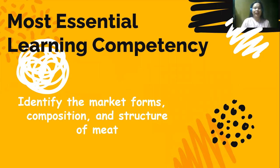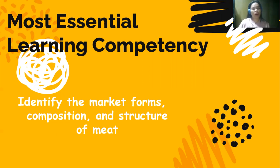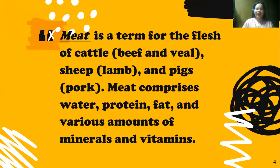Let us start to broaden our perspective by discussing the most essential learning competency, and that is to identify the market forms, composition, and structure of meat. You have to be ready because you are going to identify the market forms of meat, its structure and composition. At the end, you will learn how to value the importance of acquiring knowledge on meat composition in order to produce quality meat products.